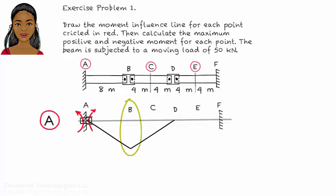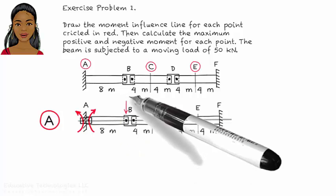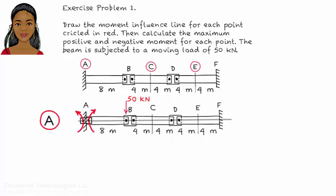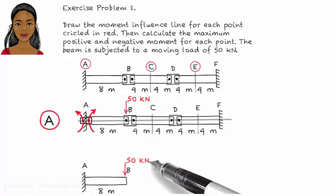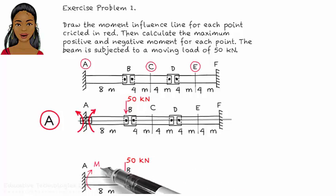To determine the magnitude of the maximum negative moment, place the load just to the left of B and analyze the beam. In this case, the entire load is being carried by segment AB. Hence, the maximum negative moment at A has a magnitude of 400 kNm.